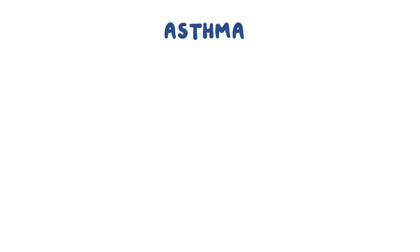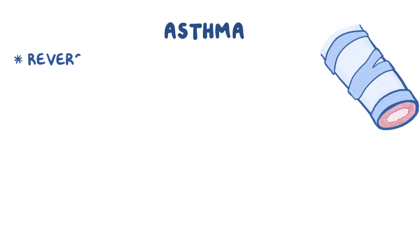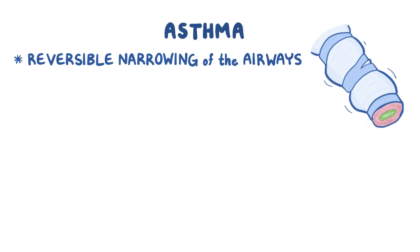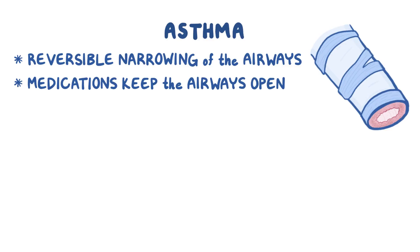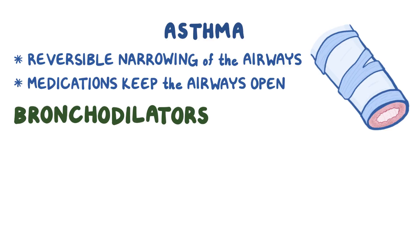In obstructive lung diseases like asthma, individuals suffer from reversible narrowing of the airways. However, medications like bronchodilators are helpful in keeping the airways open. Now based on their mechanism of action, bronchodilators can be broadly divided into four main groups.